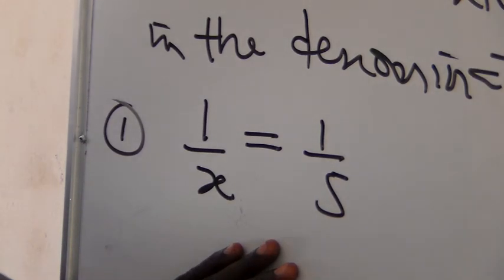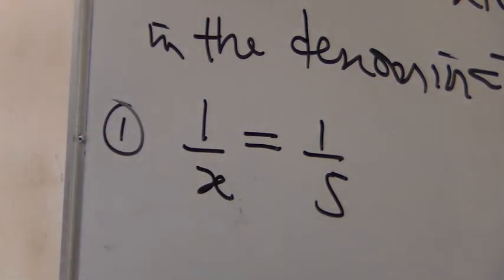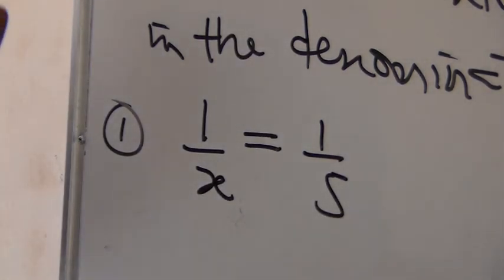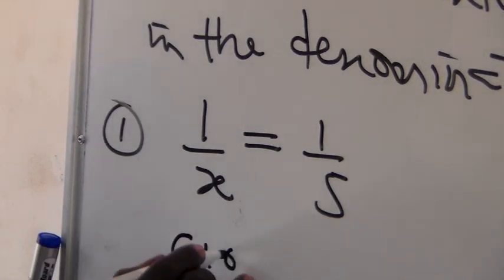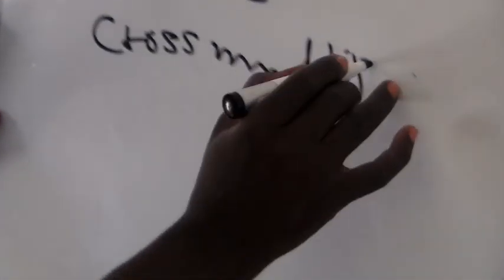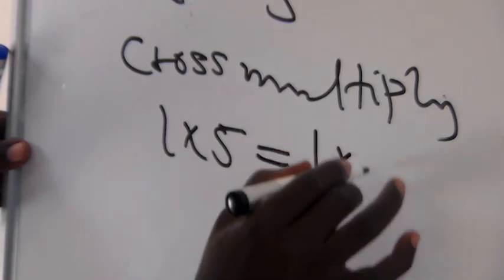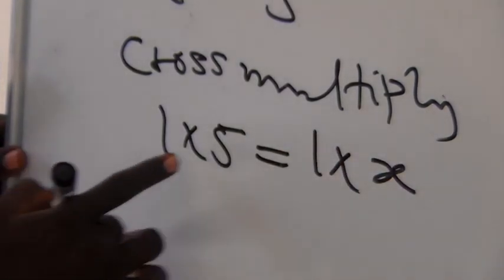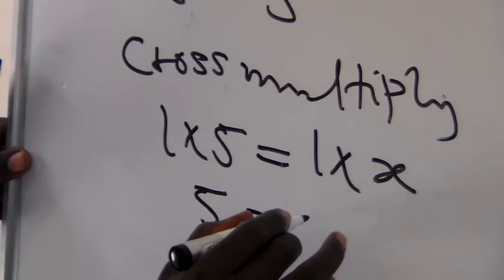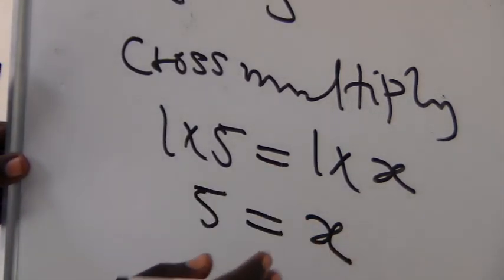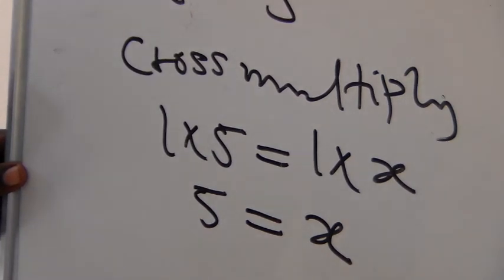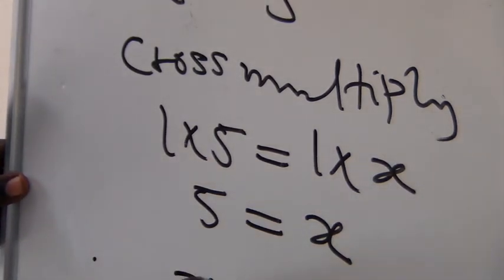When we have this kind of problem, since on the left-hand side we have one fraction and on the right-hand side we have one fraction, we can simply do cross multiplication. So when we cross multiply, we have 1 times 5 equal to 1 times x. Now 1 times 5 gives us 5, and 1 times x gives us x. Therefore x is equal to 5. It is advisable that the unknown should always be on the left-hand side of the equation.